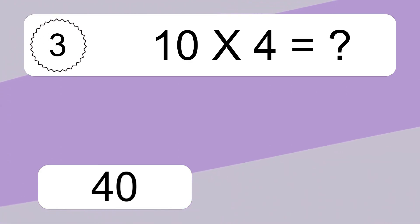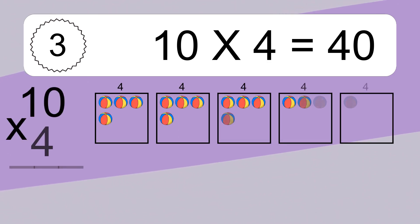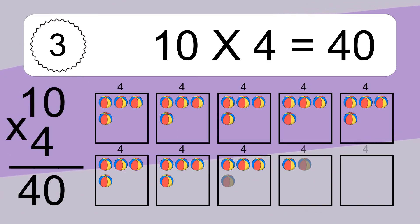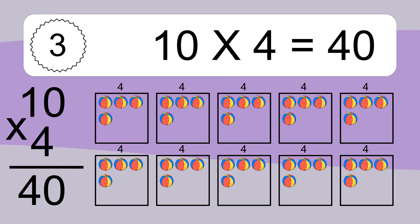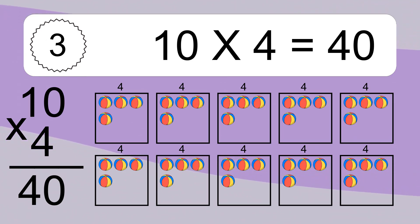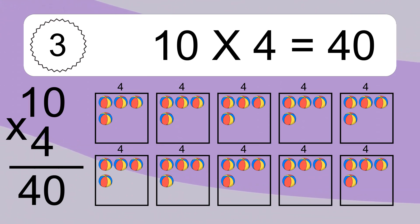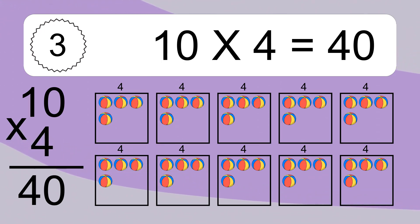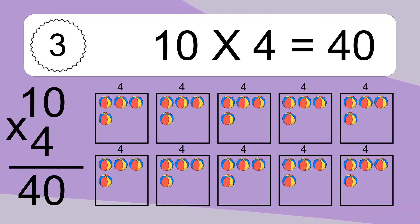10 times 4 equals what? 10 times 4 equals 40. We have 10 boxes and each box has 4 colorful balls inside. If you count all the balls in all the boxes together, you will have 10 times 4 balls. This equals 40 balls.